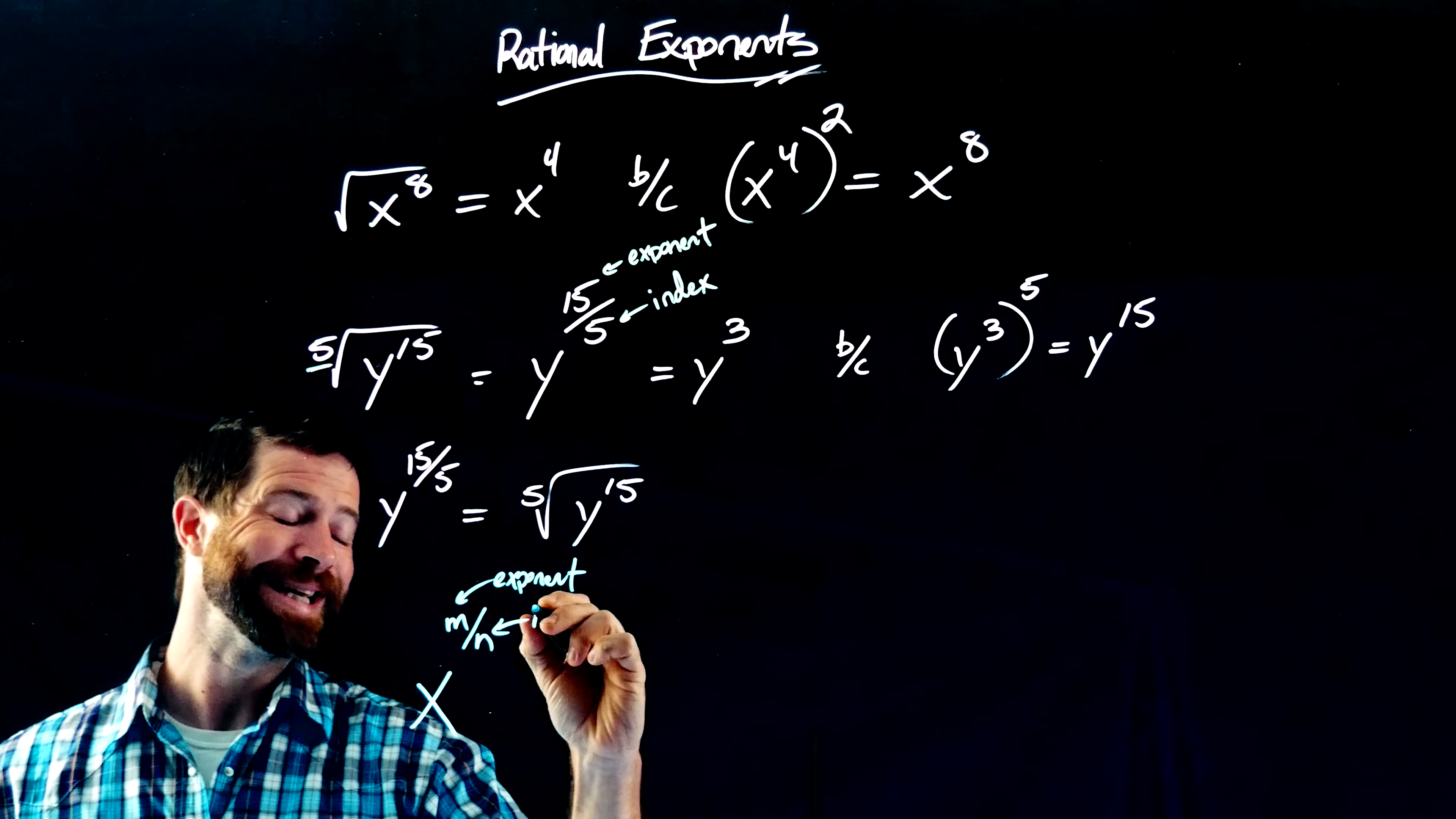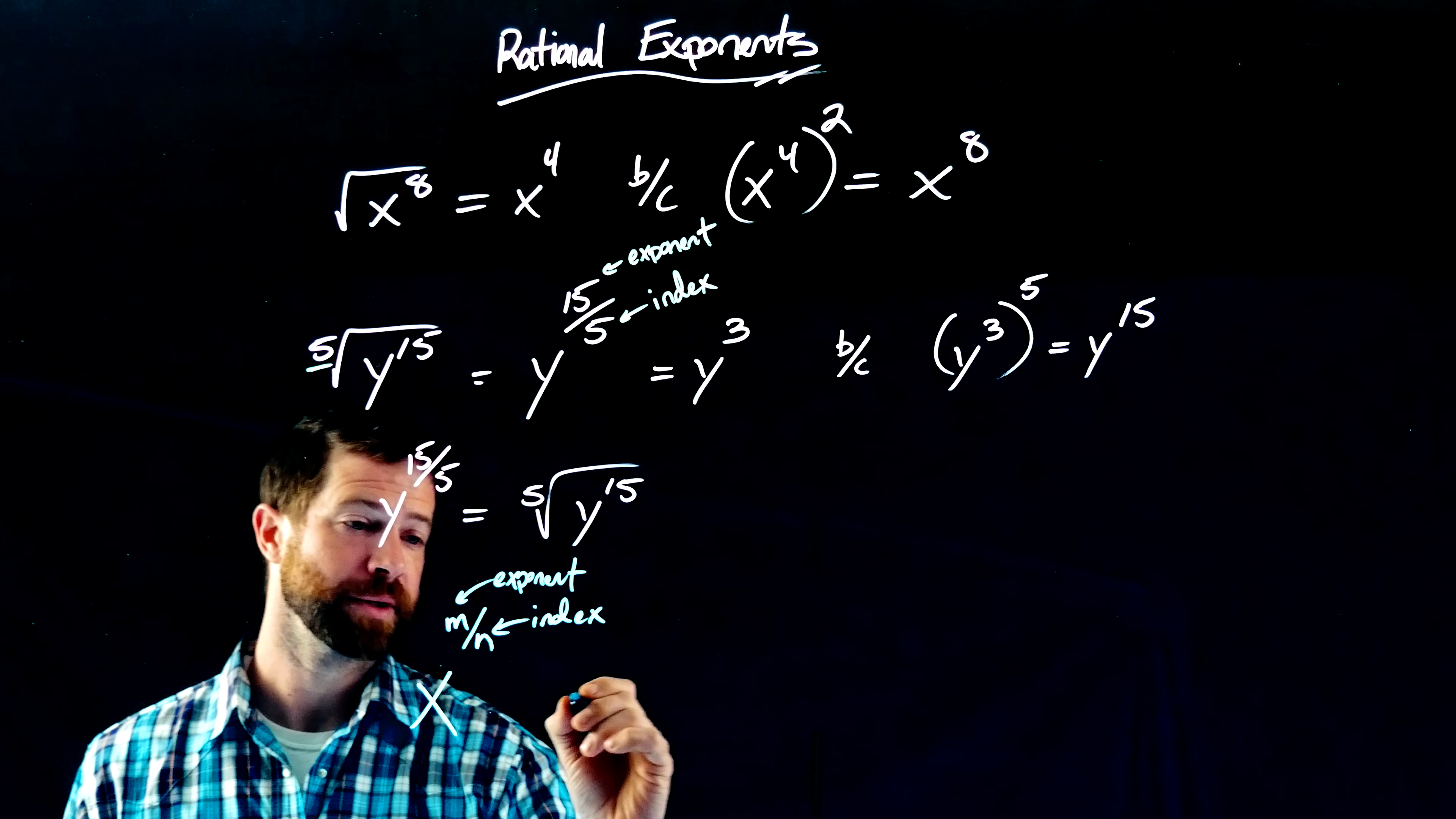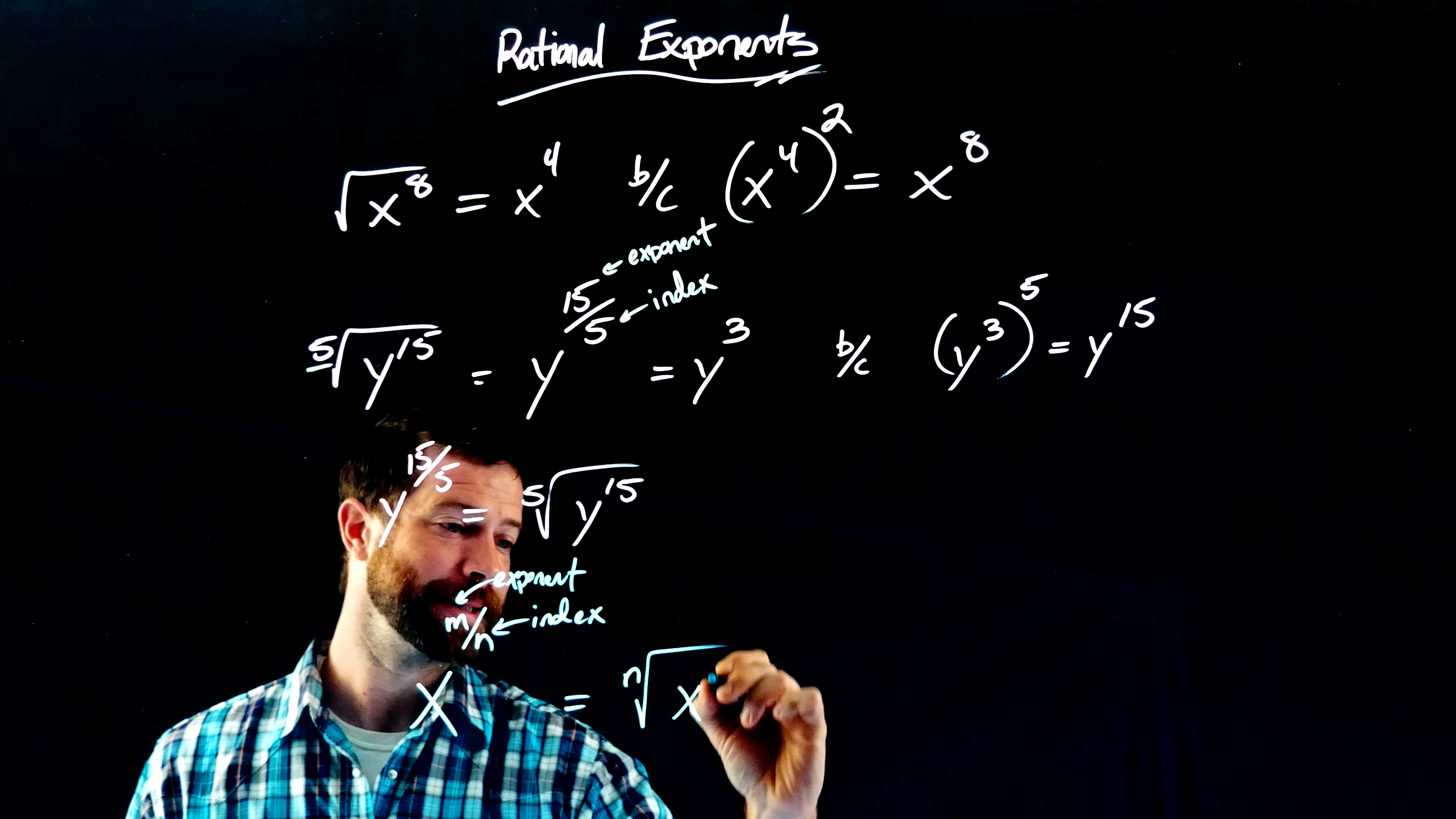and this will be the index when I turn this into a radical expression. So if I rewrite this, this would be the nth root of x to the m.